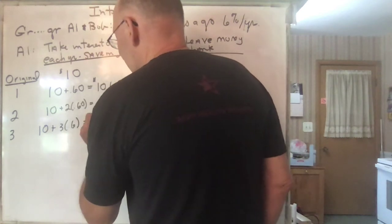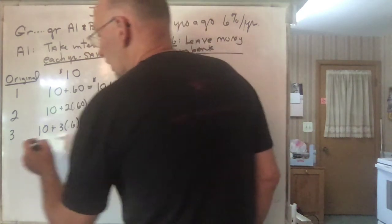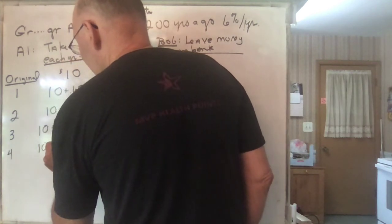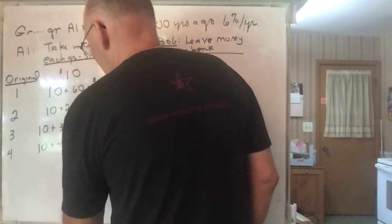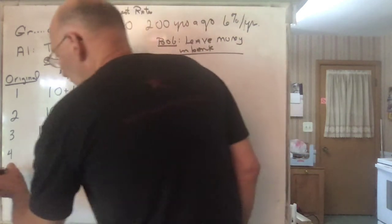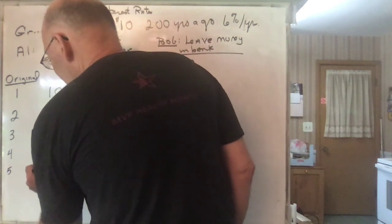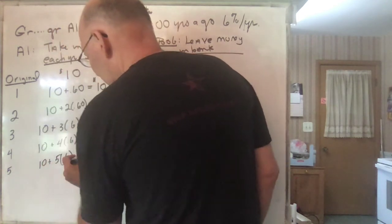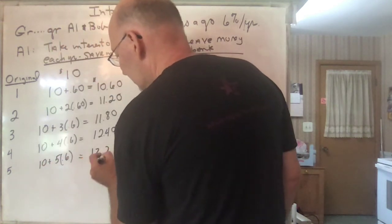At the end of the third year, it's going to be 10 plus 3 times $0.60, which is going to be $11.80. At the end of the fourth year, it's going to be 10 plus 4 times $0.60, which is going to be $12.40. At the end of the fifth year, it's going to be 10 plus 5 times $0.60, which is $3, so it's going to be $13 even.